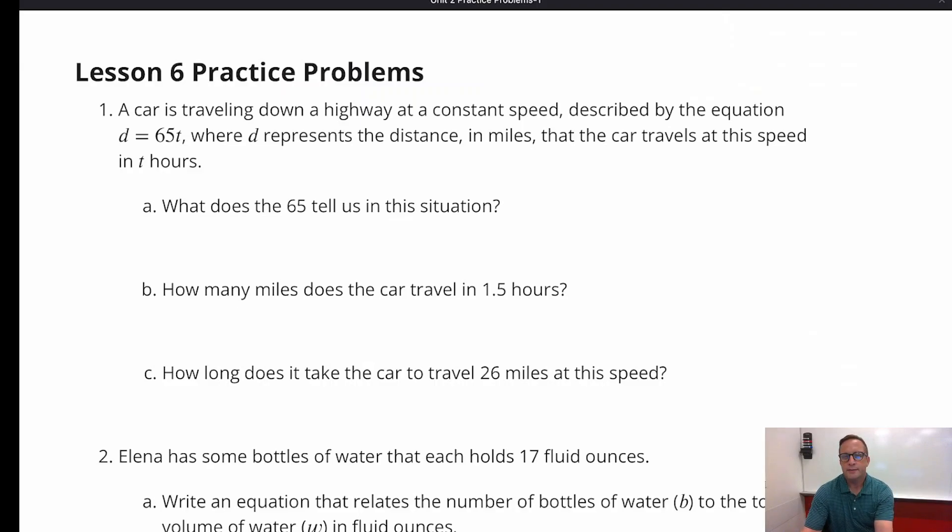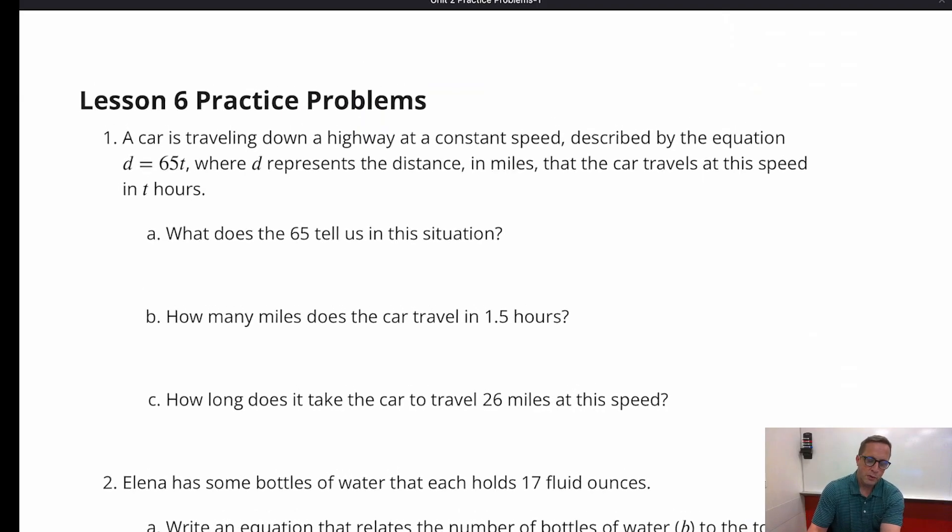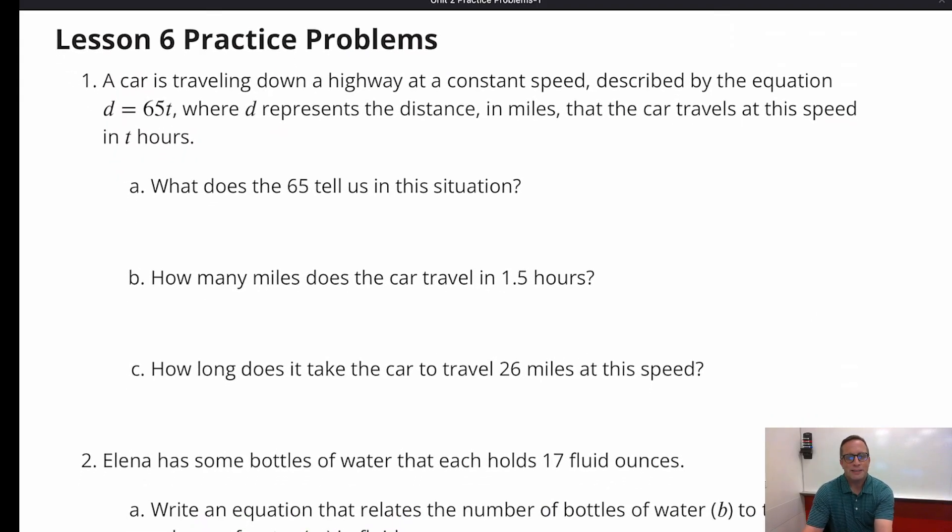Okay, looking at the lesson six practice problems, number one. A car is traveling down a highway at a constant speed, meaning its speed is not changing. Described by the equation D equals 65T. D represents distance in miles that the car has traveled at this speed in T number of hours, so T hours. Alright, so what does 65 tell us? 65 tells us the speed. That's the speed.